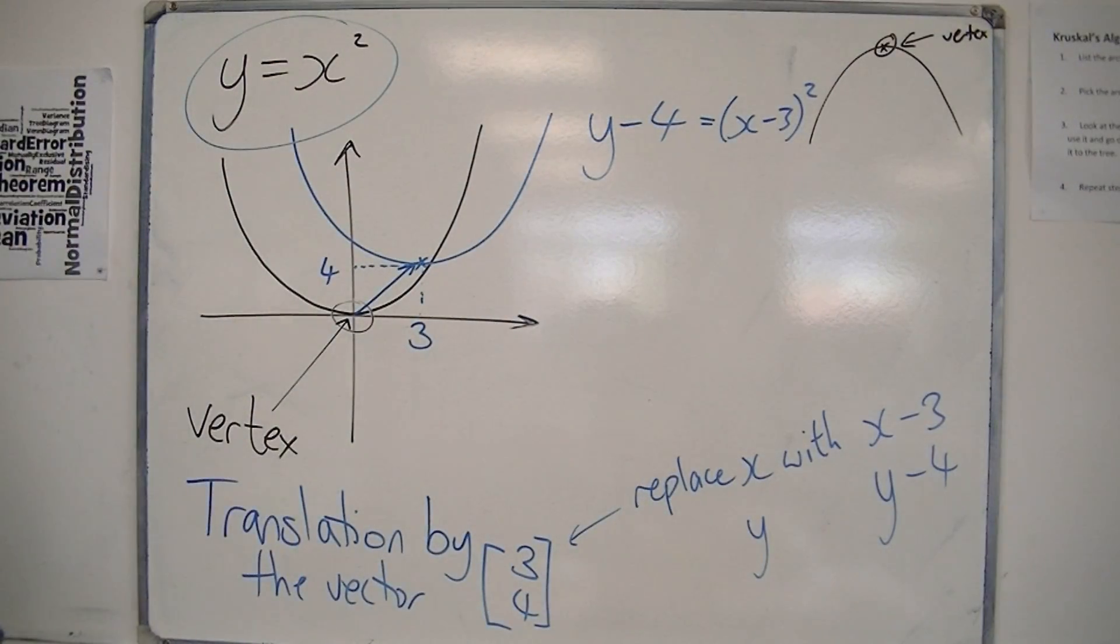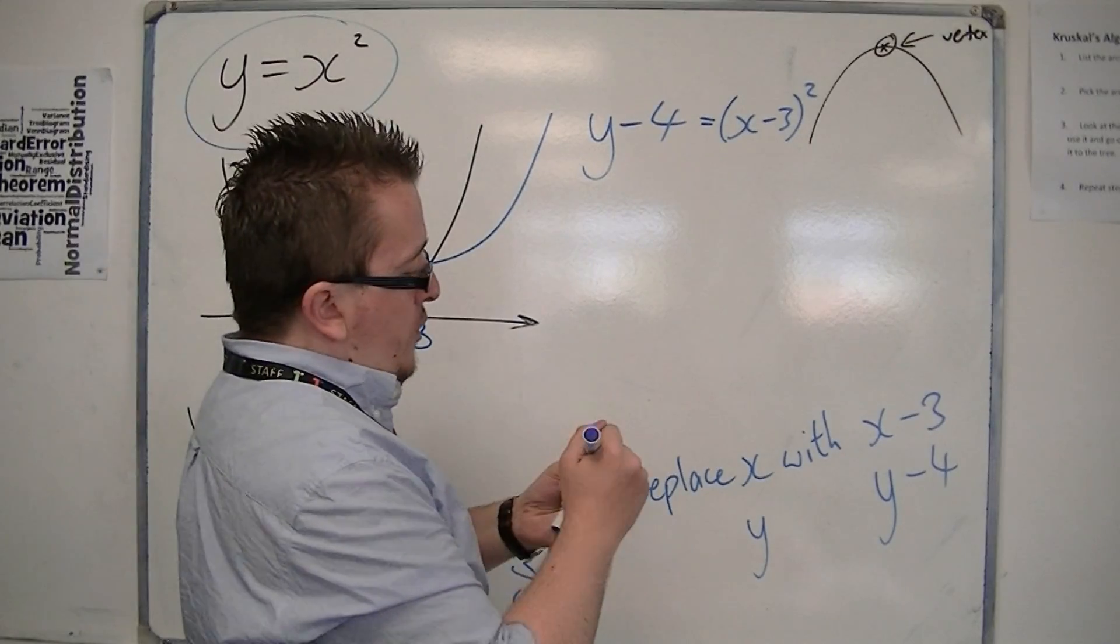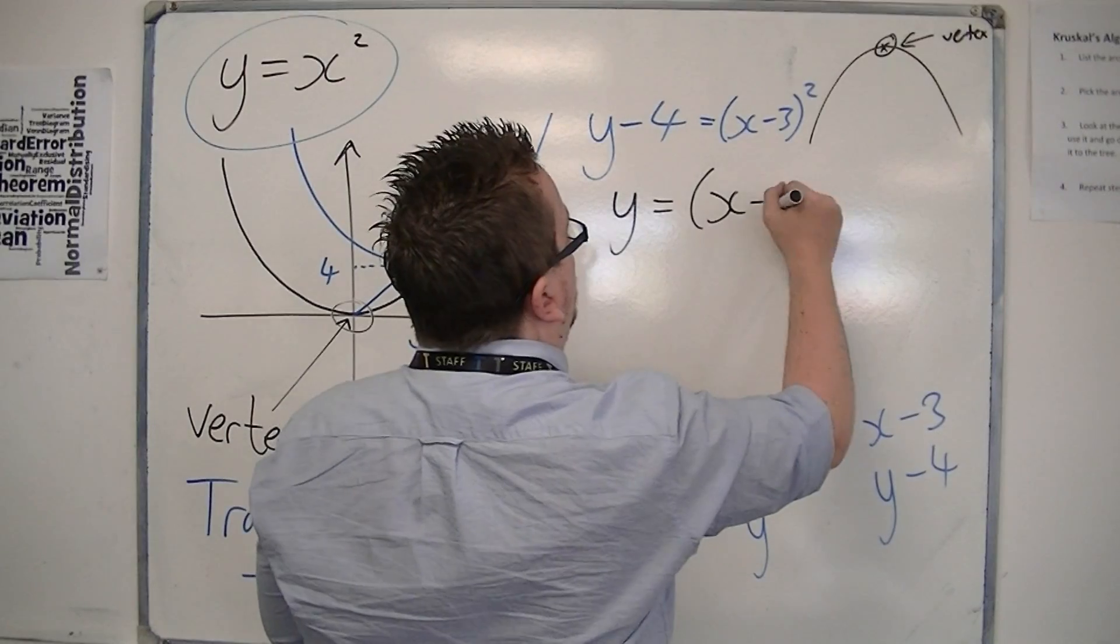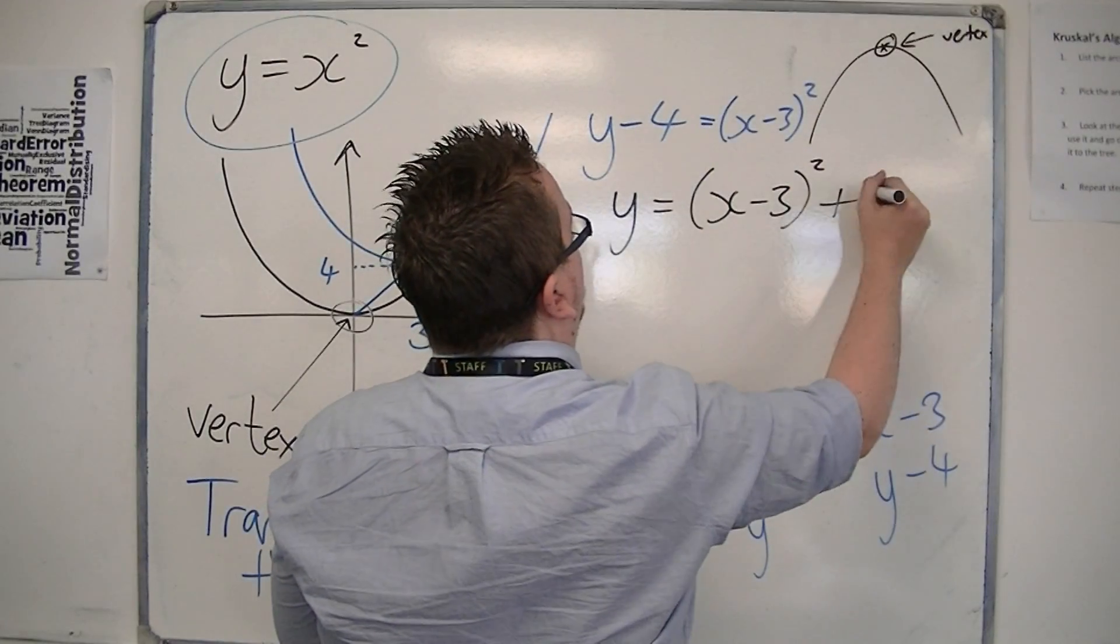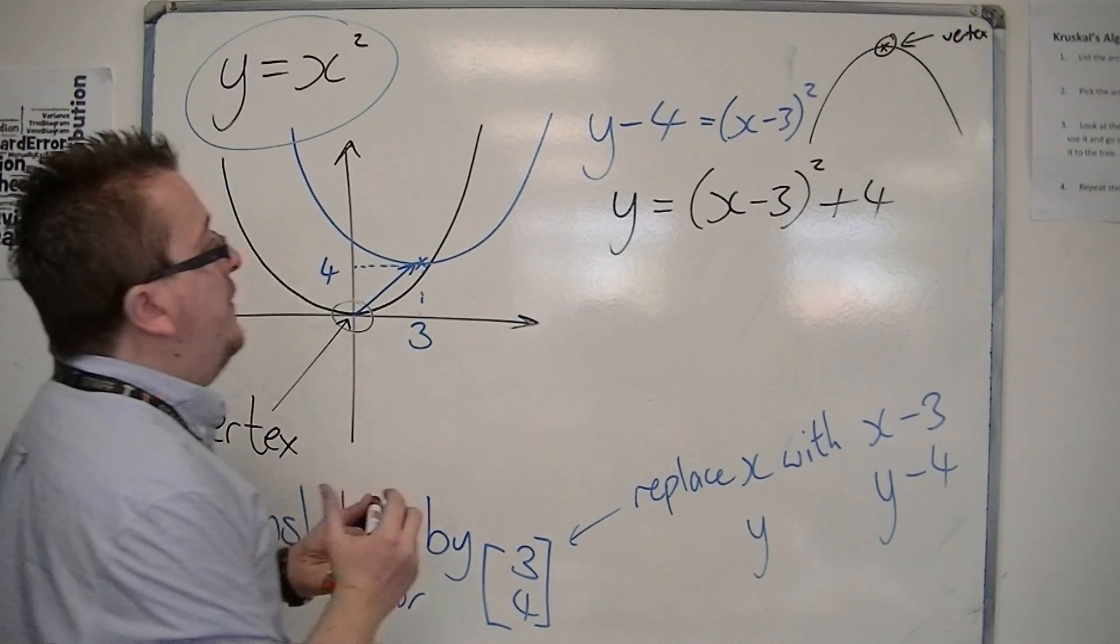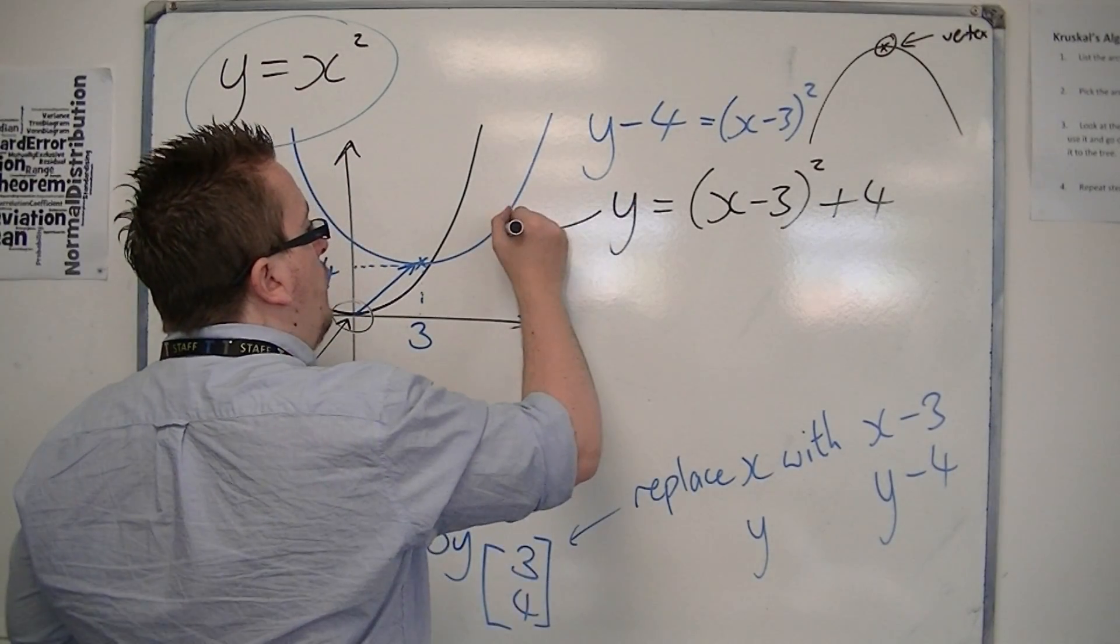And now, you can rearrange that to get y equals. So y is equal to x minus 3 squared. Add 4 to both sides and we get it like that. So this is the equation for the blue curve.